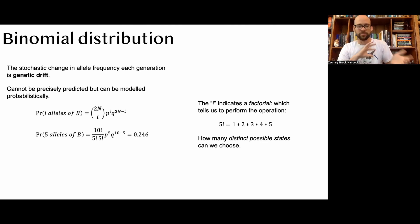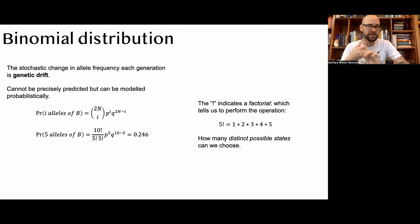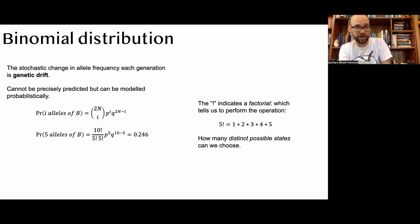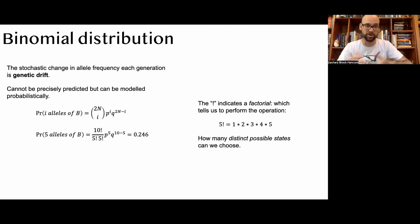We've looked at drift very simplistically, just drawing beans from a bag, but we can actually evaluate this probabilistically. Since it's not deterministic like mutation or selection, we approach it in a probabilistic manner. Since we've been treating it as a bi-allelic state — reds and blues, or P and Q — with only two choices we can model this using the binomial distribution. The binomial is the same distribution you'd use to model a coin toss since you can get heads or tails — it's binary.